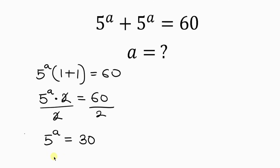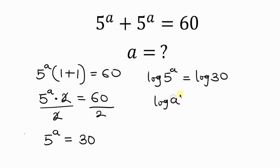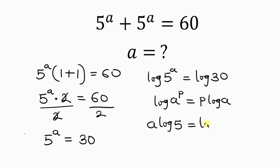Our next step will be to take the log of both sides. So I'll take the log of 5 to the a — this is equal to — I'll also take the log of 30. Now our next step will be to apply the property log(a^p) = p·log(a). So this can be written as a·log 5, and this is equal to log 30.